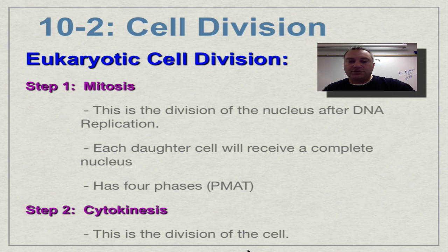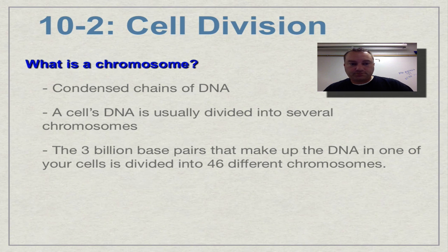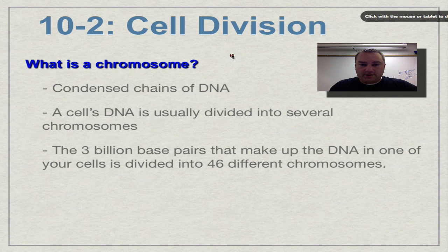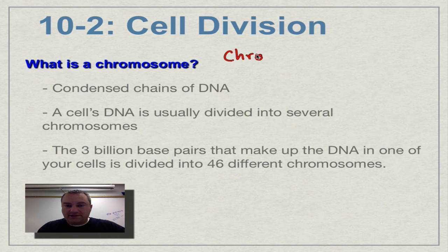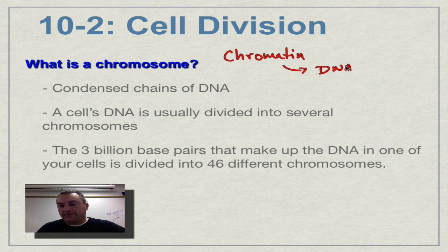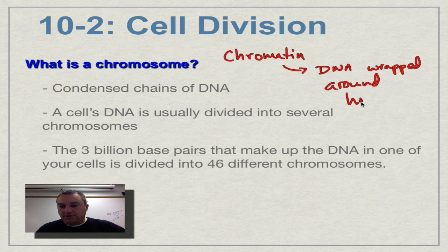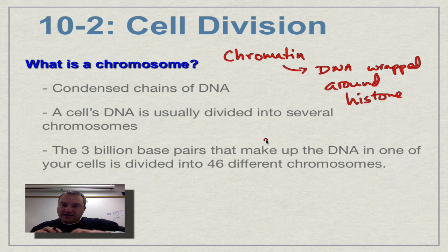Let's start learning about chromosomes that have to move around during mitosis. A chromosome is coiled-up pieces of DNA. Remember chromatin? Chromatin is DNA wrapped around a protein called histone. When you take this chromatin and coil it up real tight, that's going to be a chromosome.